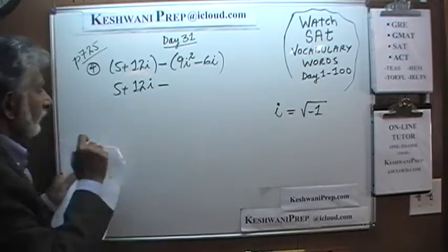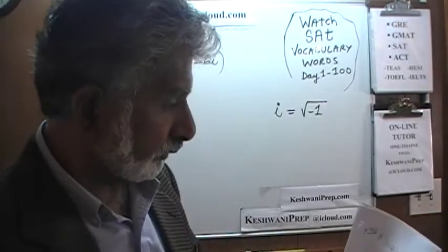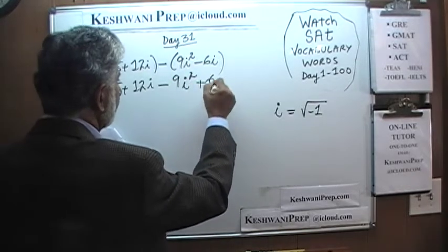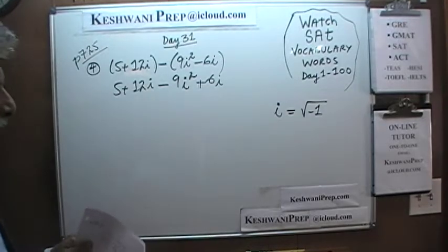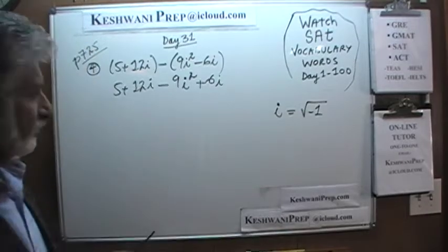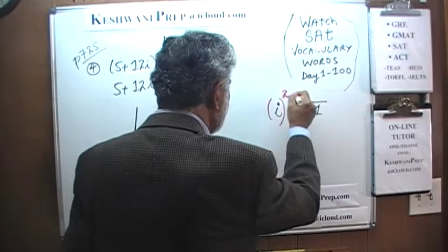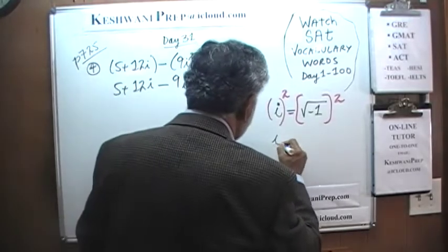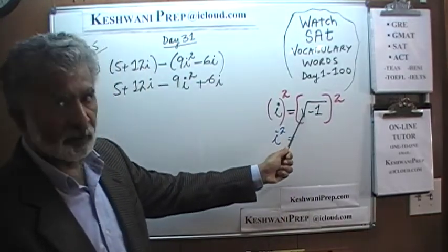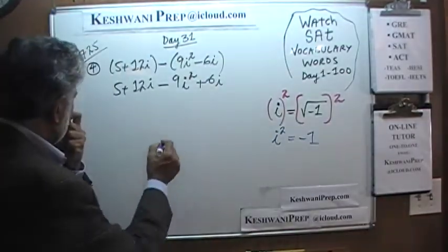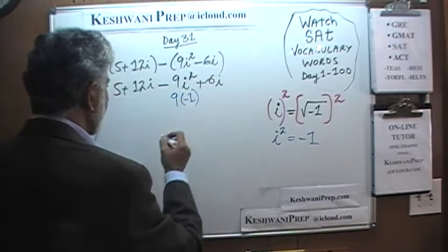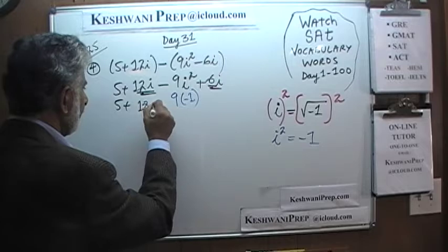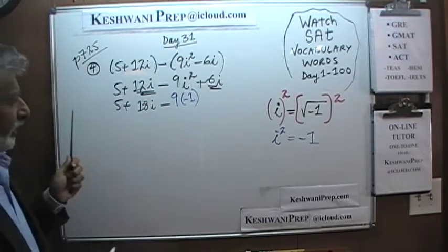Negative and negative is going to be positive 6i. Now we have to figure out the value of i squared. We square both sides: i squared equals the square root of negative 1, squared — the square root and the square cancel out, leaving negative 1. So here we have 9 times i squared equals 9 times negative 1, which gives us positive 9. So we get 5 plus 12i and 6i, that is 18i, minus 9 times negative 1 which is positive 9.